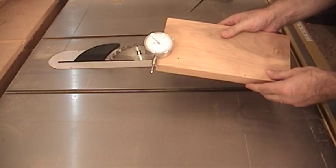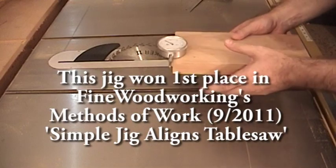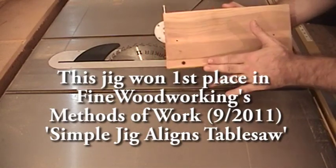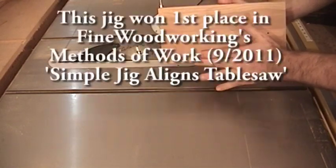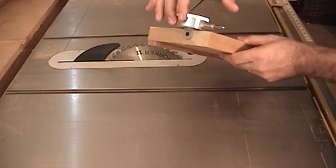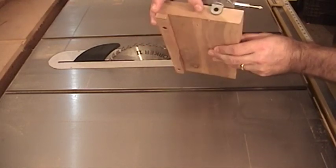This jig really couldn't be any easier to make. All it is is a block of wood with a runner screwed to the bottom of it, set to one side. And I have attached the dial indicator to the end of the block of wood with a screw.